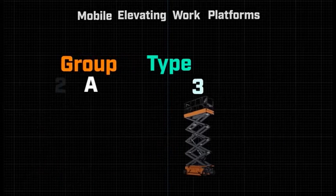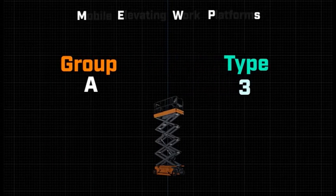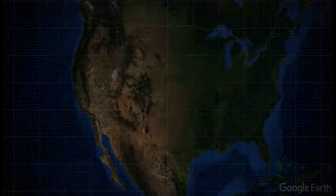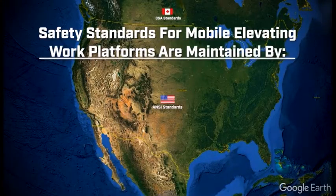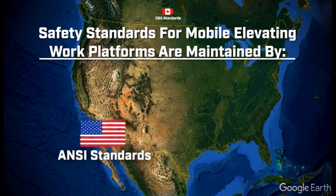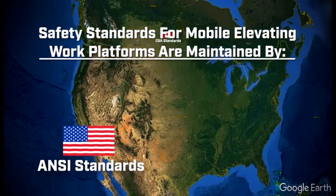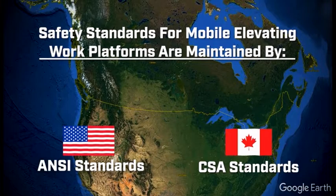This video series will be covering Group A, Type 3 Mobile Elevating Work Platforms, commonly known as MEWPs, or better known as scissor lifts or mast lifts. The safety standards for mobile elevating work platforms are maintained by ANSI in the United States and CSA in Canada. Copies of these standards are available online from these organizations.